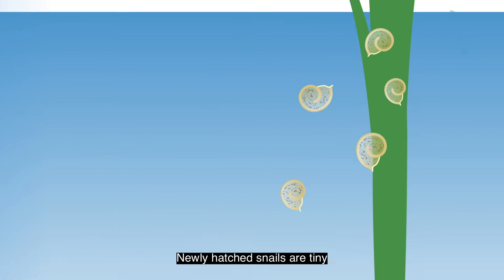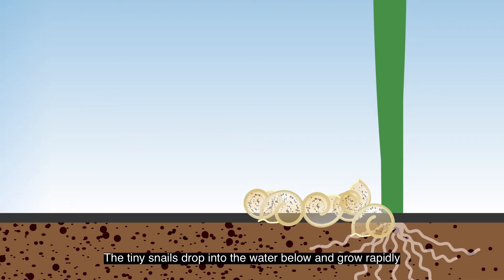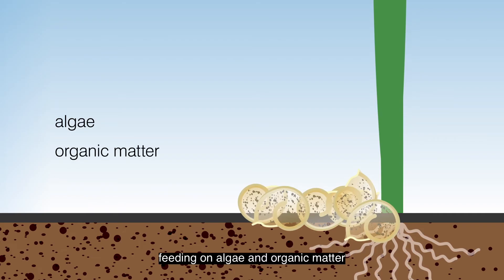Newly hatched snails are tiny, with shells of approximately 2 millimeters in diameter. The tiny snails drop into the water below and grow rapidly, feeding on algae and organic matter.